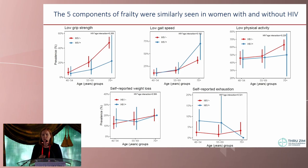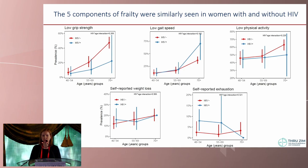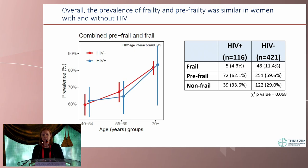When looking at the five components of frailty across three age strata — HIV-negative shown in red and HIV-positive in blue — we actually saw little difference between the two groups on these individual components. Consequently, when combined, we did not see a significant difference in the prevalence of frailty by HIV status in any of the three age groups. However, from the table, there was a tendency for a larger proportion of HIV-negative women to be frail, which reflects that they were the older subgroup.